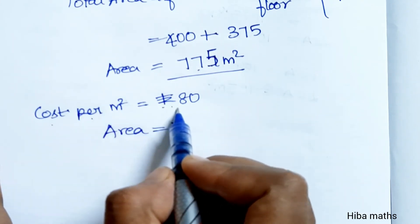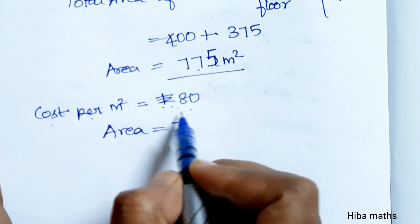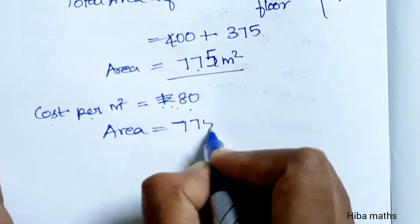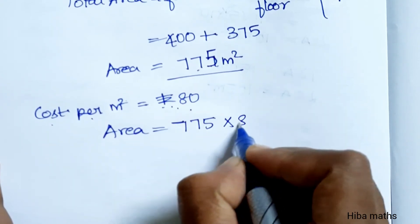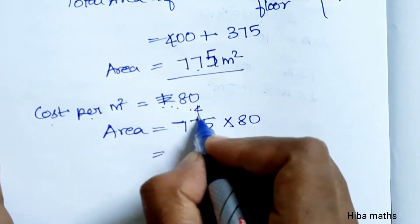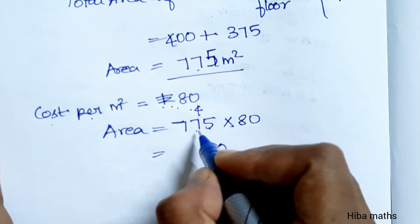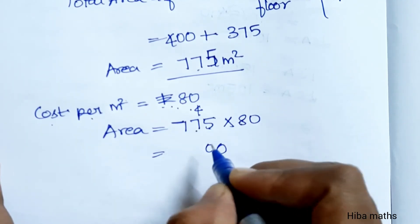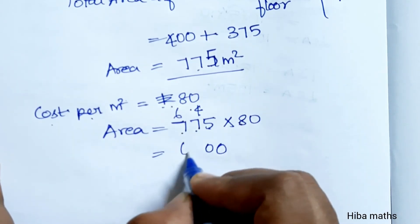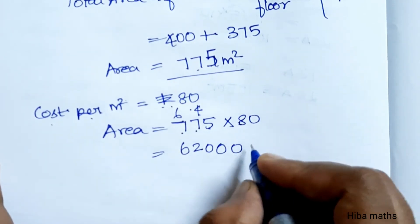Cost per meter square is 80 rupees. Total area is 775 m². So 775 × 80 = 62,000 rupees.